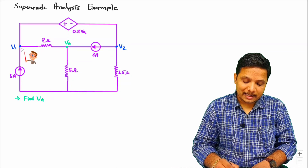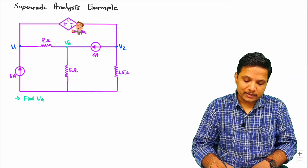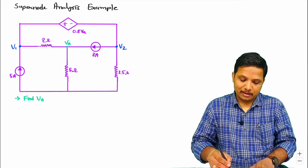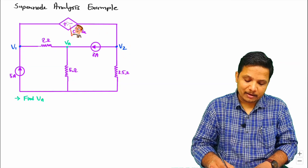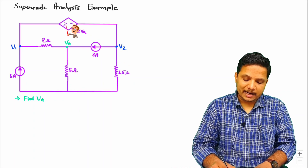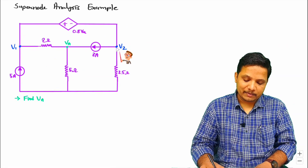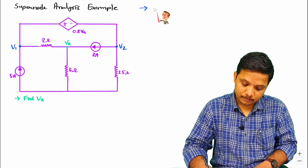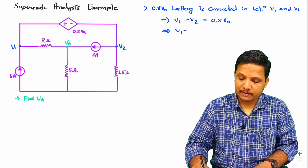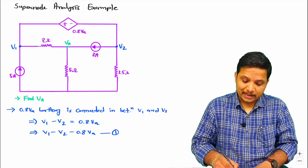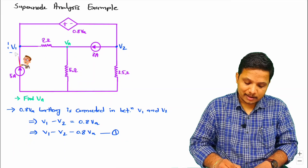Supernode analysis is applicable only if we have a voltage source in between two nodes. In between V1 and V2, we have a voltage source of value 0.8 Va. So supernode is applicable here, as V1 and V2 have only a battery connection between them. I will write down the basic equation of this battery — positive terminal at V1, negative terminal at V2 — so V1 minus V2 equals 0.8 Va. This is equation one.